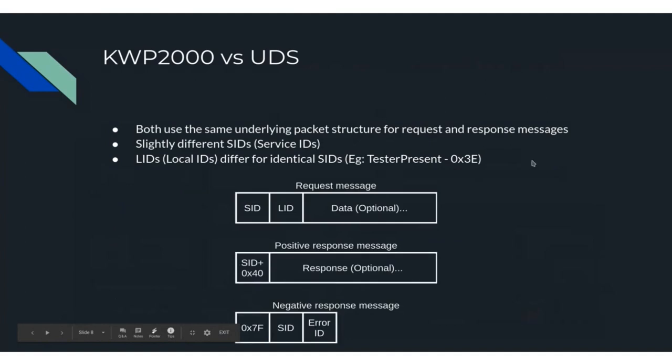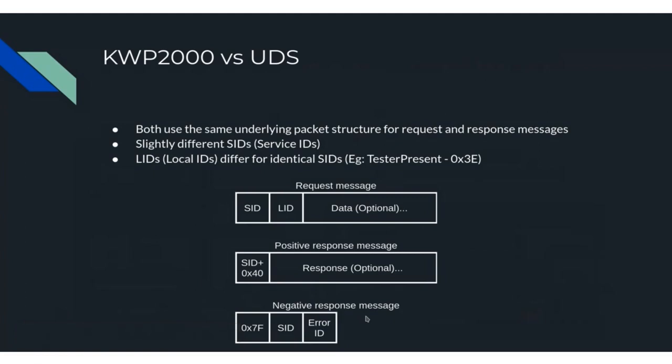A quick touch-up on Keyword Protocol 2000 versus UDS. They both use the same message format regardless of the transport layer — they can use either K-Line or ISOTP to talk to ECUs. Both use the same package structure: a service ID defining the request, followed by a local ID, then any optional data. If the ECU responds positively, it replies with your service ID plus a constant 0x40 with the response. A negative response has the first byte 0x7F followed by the service identifier then the error code. Error codes, service IDs, and local IDs differ slightly between KWP2000 and UDS.